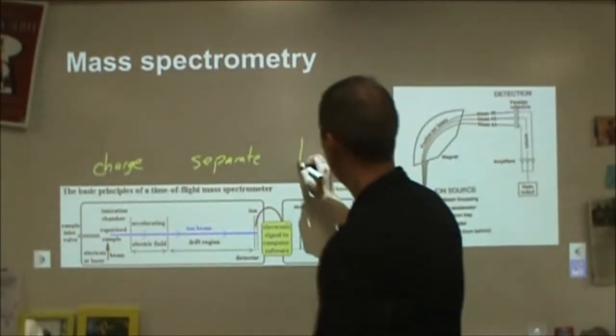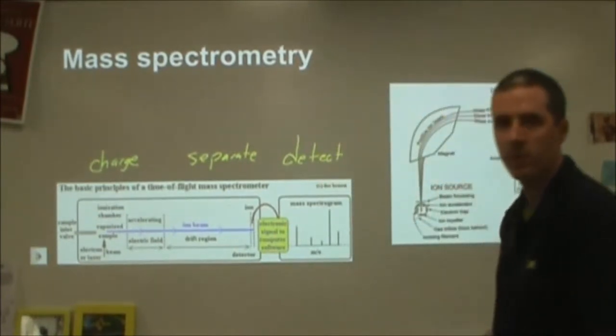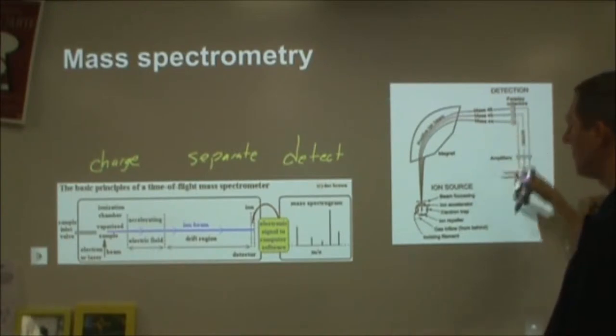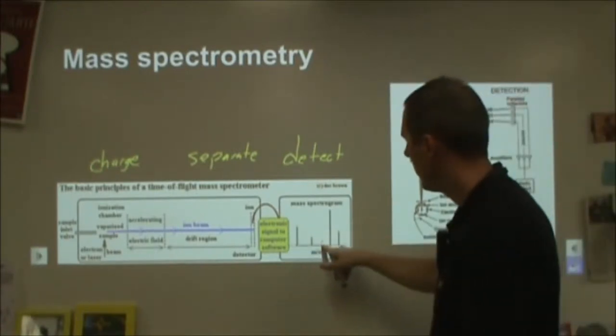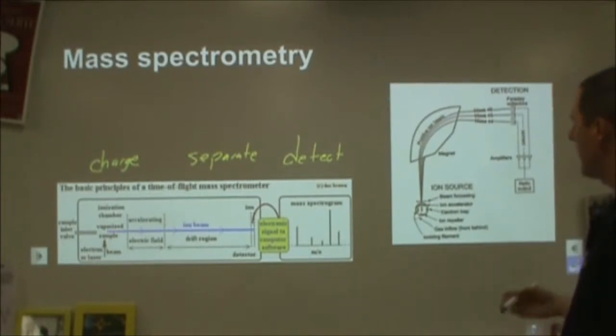The last thing you need to be able to do is you need to be able to detect whatever is slamming into your detector. So somehow your current needs to be measured of how many charged particles are hitting a given piece, and you can see that in the relative sizes of the particular piece in a mass spectrometer.